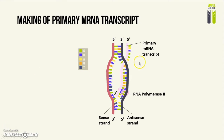In theory, either of the DNA strands can be the template for the mRNA. However, the directionality is determined by something called a promoter. It determines exactly where on the DNA molecule the enzyme is supposed to start. The promoter does this by orienting the RNA polymerase 2 enzyme in a specific direction along the DNA.